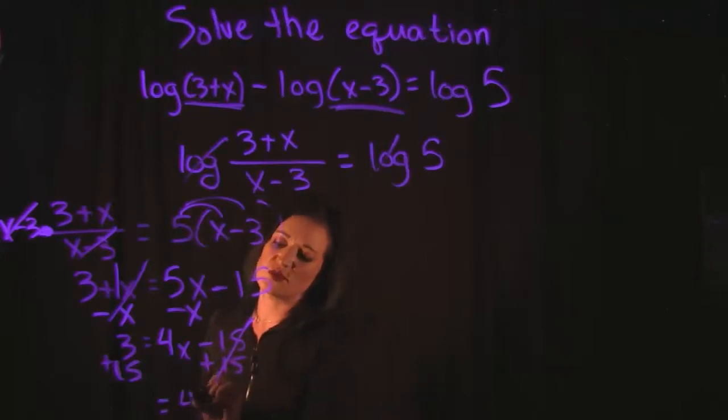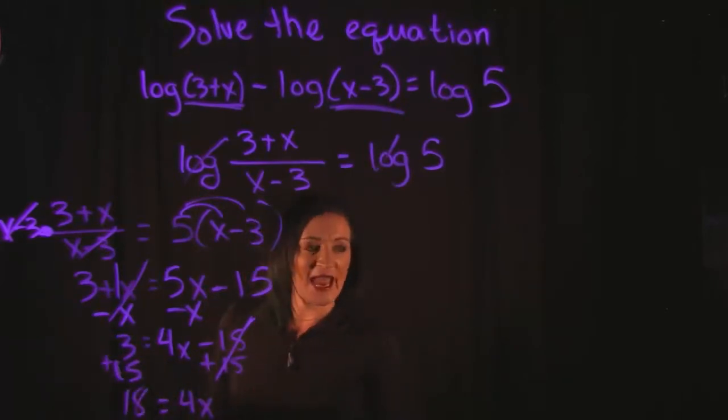So that is going to leave us with a 4X on the right hand side, and on the left hand side we had a 3, we added 15, that is now giving us an 18.